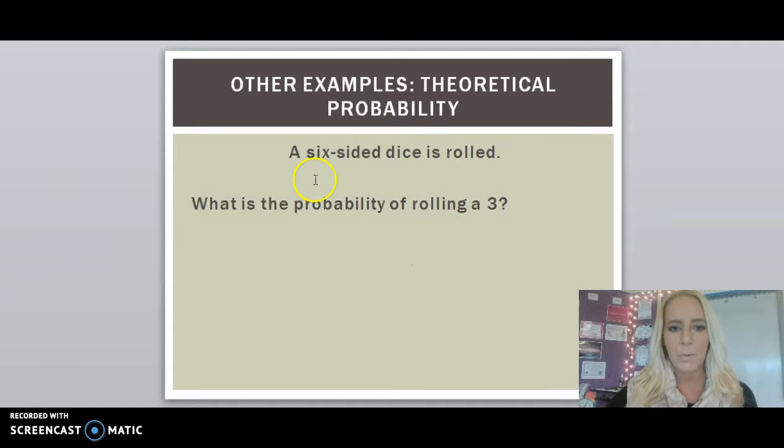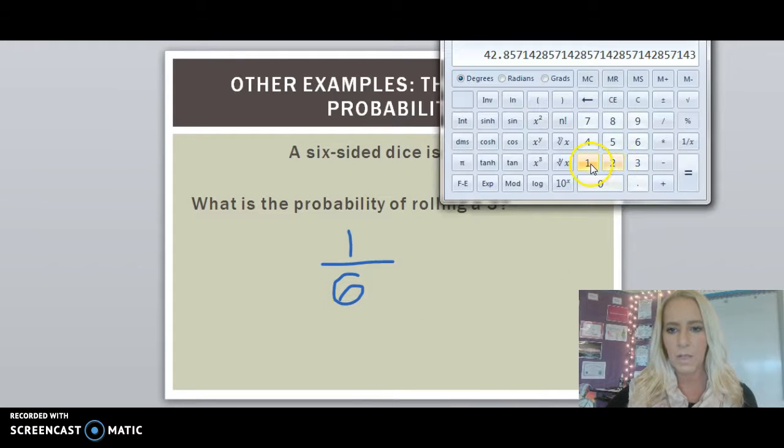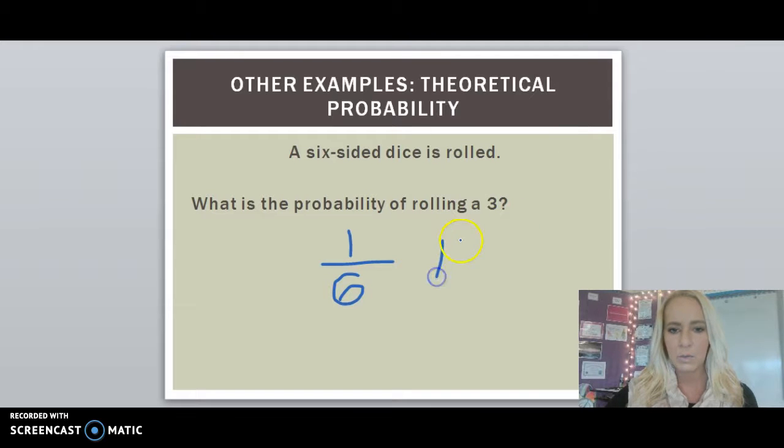Another example is you roll a six-sided dice. What is the probability of rolling a three? Well, on a six-sided dice, there's only one three. And there's six sides to your dice. So there's a one out of six probability of selecting a three. To convert that to a percent, I'll do one divided by six times 100. So there's about 16% probability of rolling the number three.